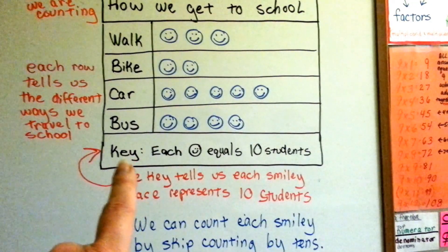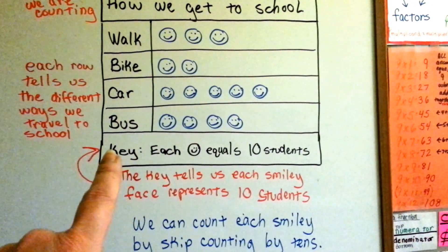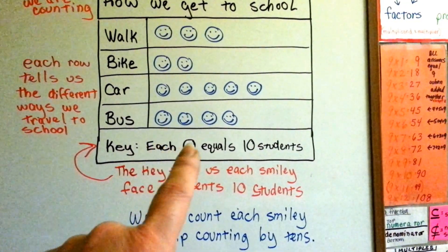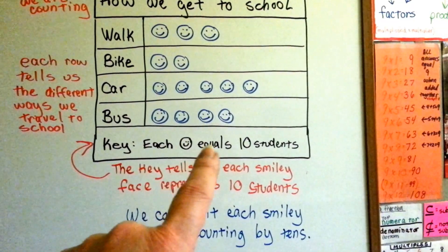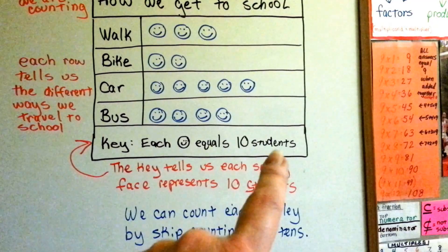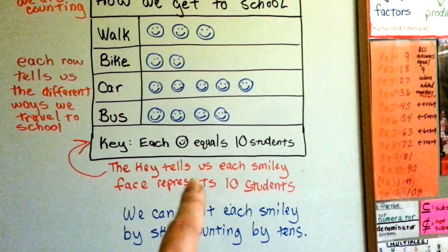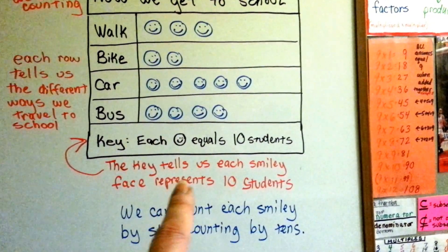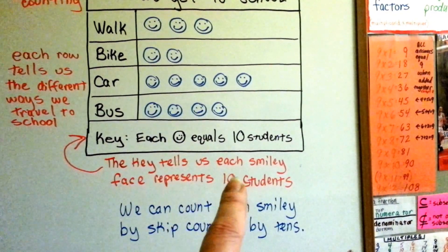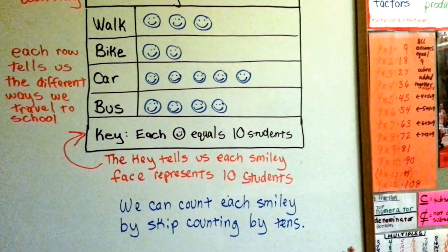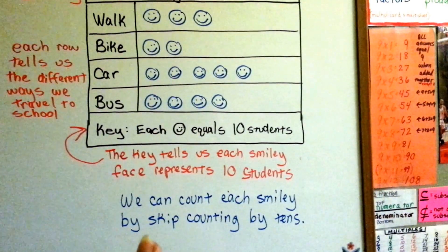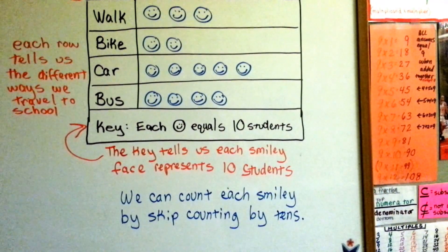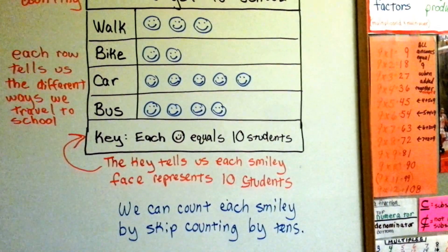At the bottom is a key. The key tells us that each smiley face equals ten students — each smiley face represents ten students. We can count each smiley by skip counting by tens.